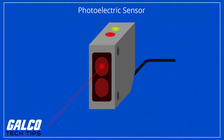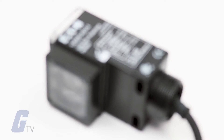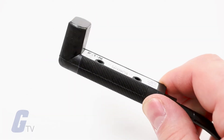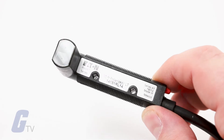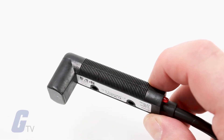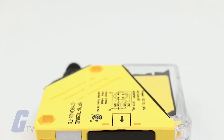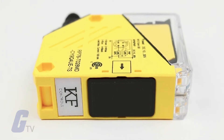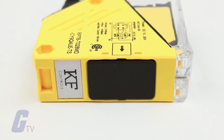Photoelectric sensors work by emitting a visible or infrared light beam from its light-emitting element. Photoelectric sensors can work differently depending on the type of sensor it is. Some may reflect their light back to itself for detection, while others may emit their light to a separate element and watch for breaks in the signal.